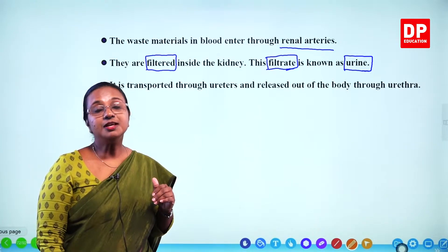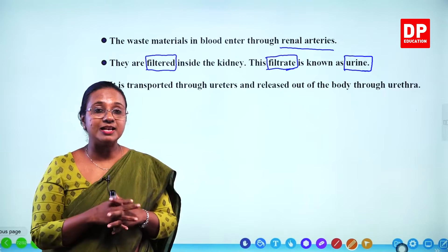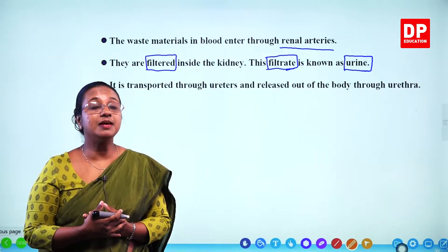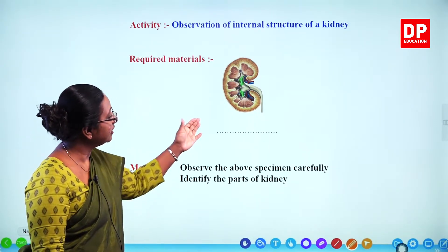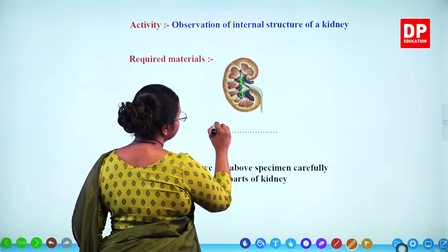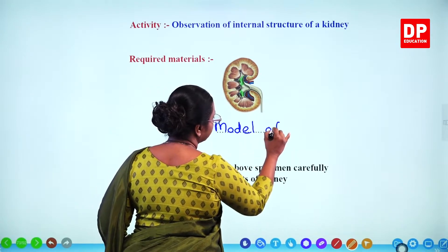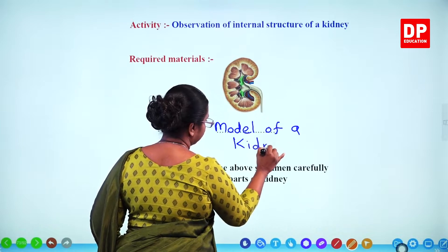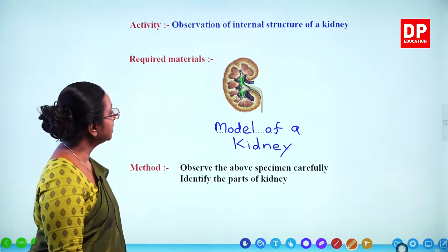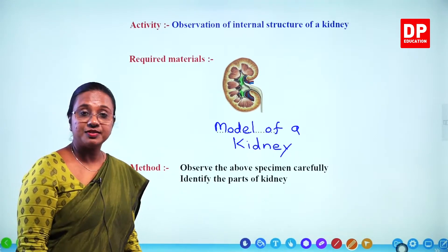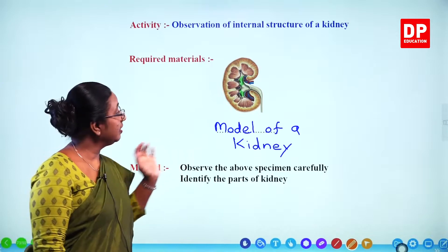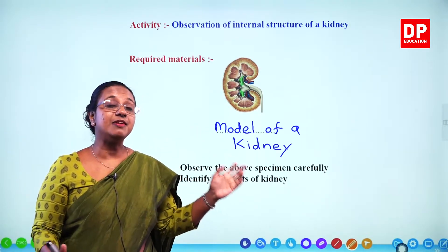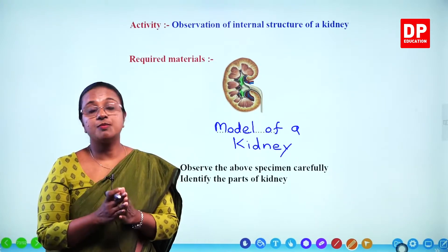You saw the parts of the urinary system and understood how blood is supplied and removed. Next we observe the internal structure of a kidney using a model. Observe the specimen carefully and identify the parts of the kidney. If in the lab, we would have a physical model to take apart, but with advances in technology we use anatomy software to observe all these parts.